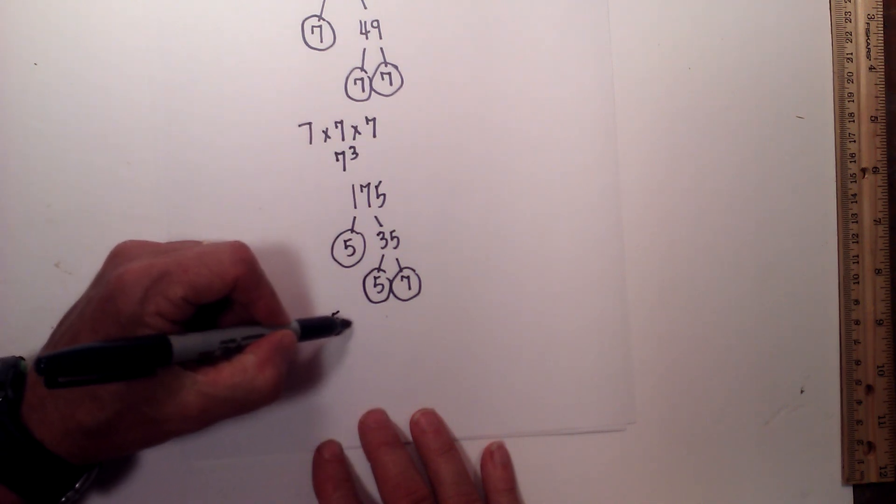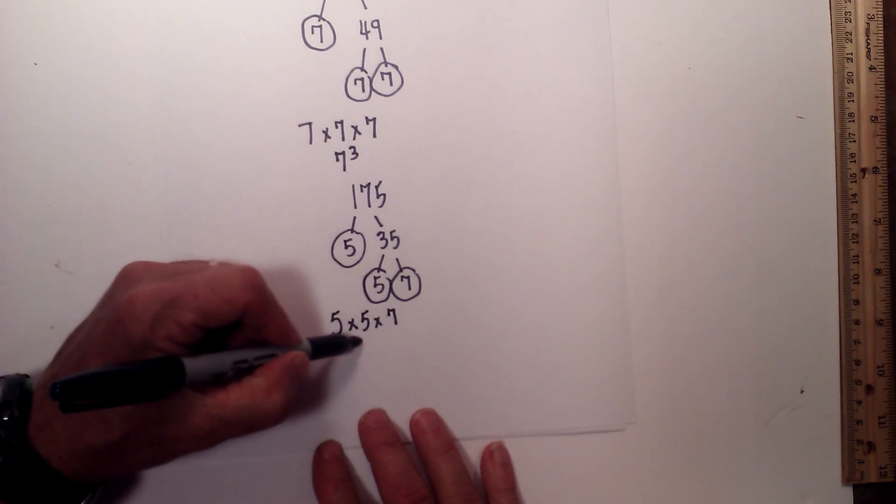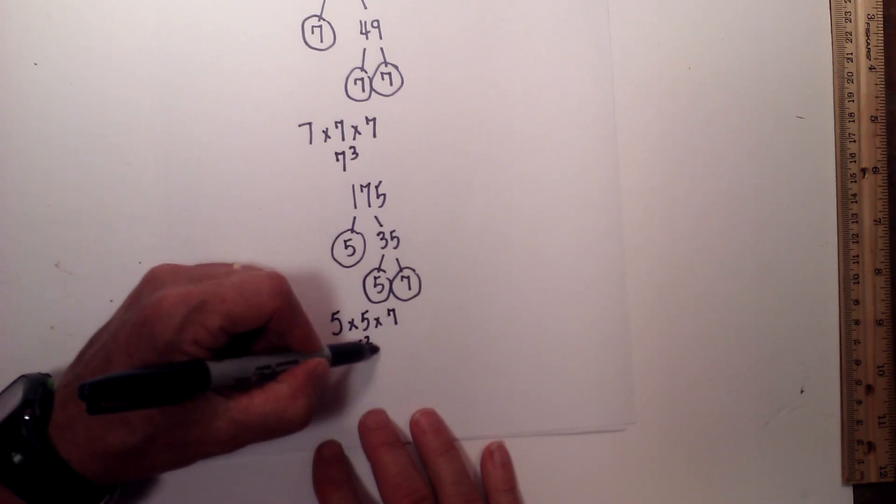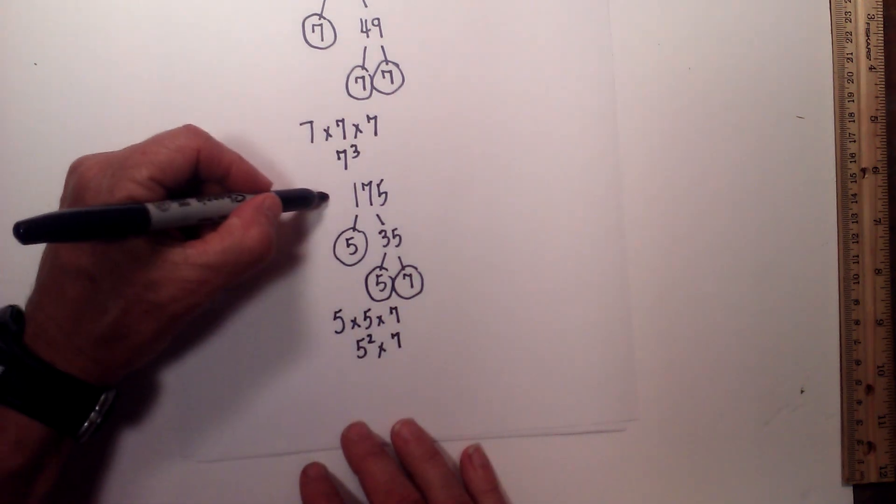So the prime factorization of 175 is 5 times 5 times 7, or 5 squared times 7. There we go, prime factorization of 175 and 343.